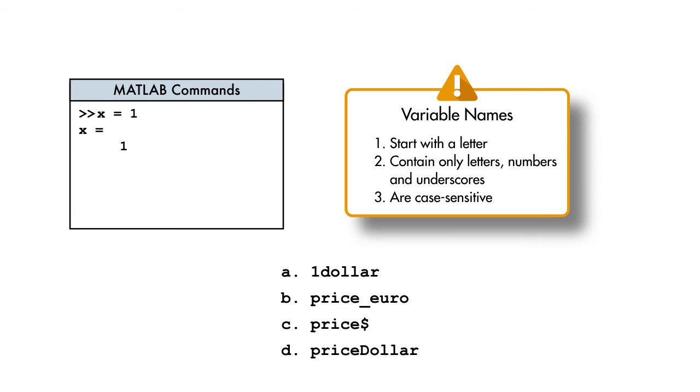Take a moment and try identifying the valid variable names in this list. We see that both B and D are valid names, but A violates Rule 1 and C violates Rule 2.